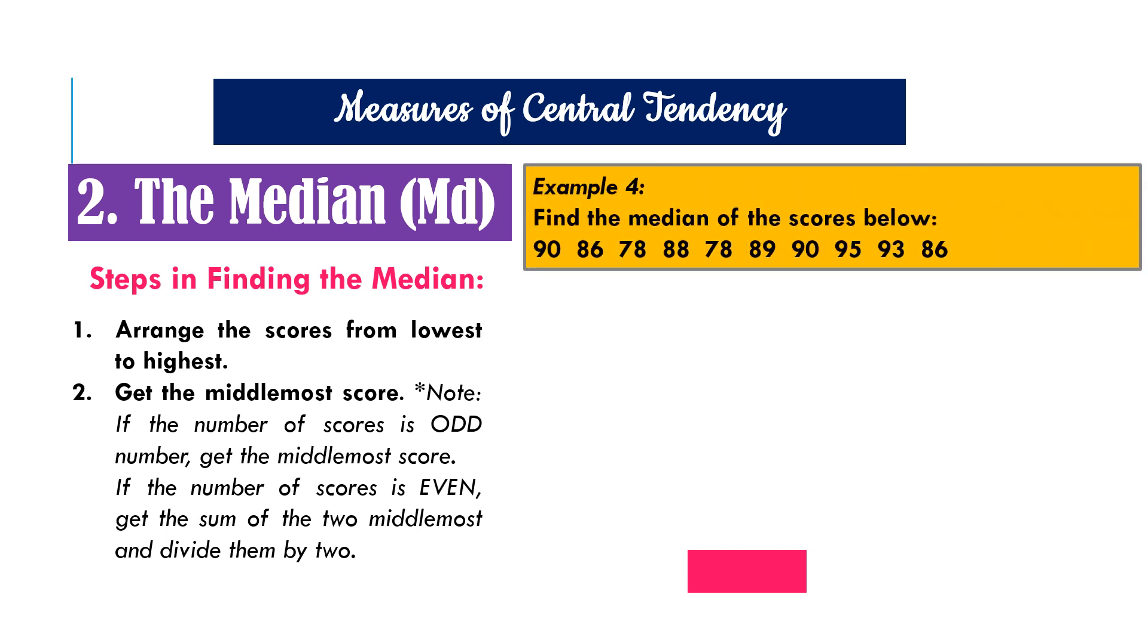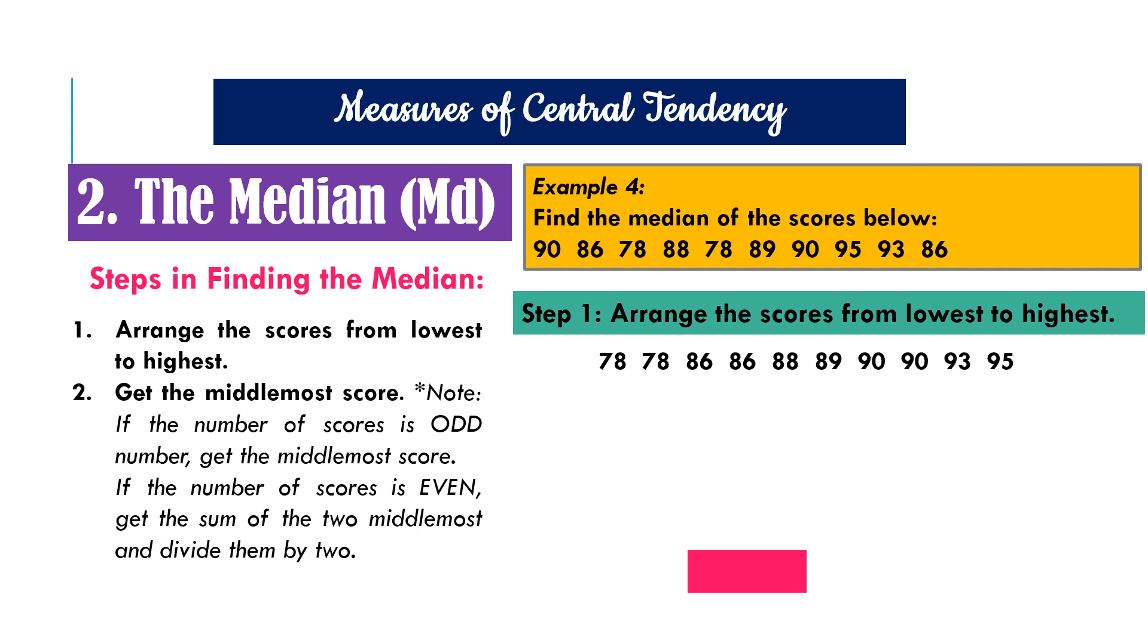Let's look at the examples. Example four, find the median of the scores below. For step one, we arrange the scores from lowest to highest. And when we do that, here is the result. So we have 78, 78, 86, 86, 88, 89, 90, 90, 93, 95.